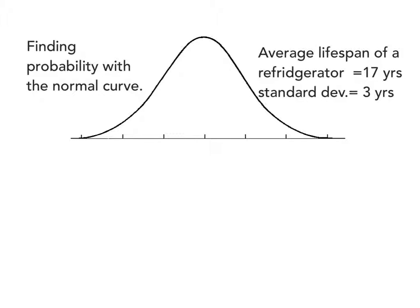Here's an explanation of how to work with normal curves. First of all, normal curves are a way to describe what the distribution looks like for many, many items or many, many people. Normal curves are bell-shaped, and they are centered at the average and the median and the mode.